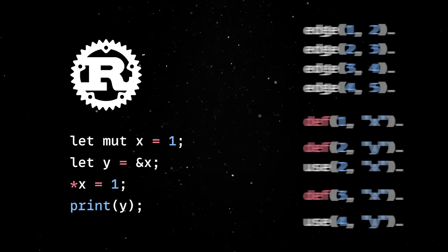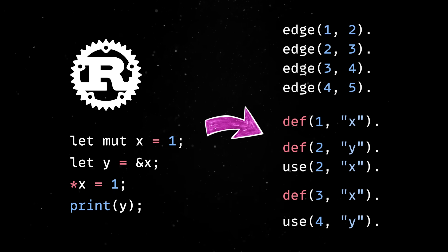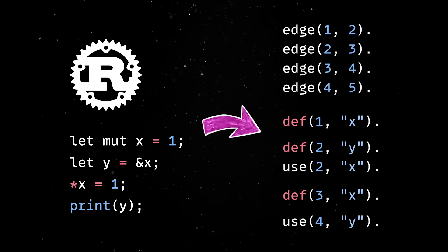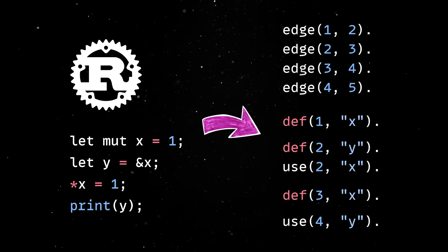If we feed Mangle a small Rust snippet with a borrow checker issue, it will figure out automatically which variables are live at each point in the control flow. This is the strength of deductive database programming.